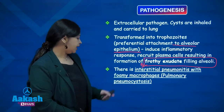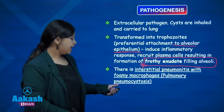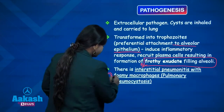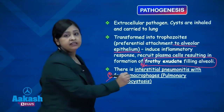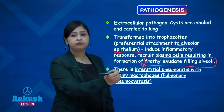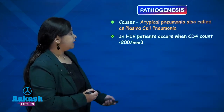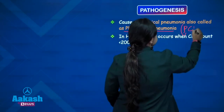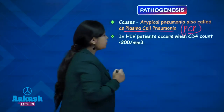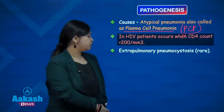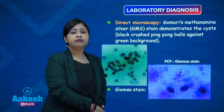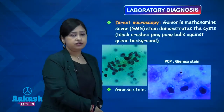There is interstitial pneumonitis with foamy macrophages and pulmonary pneumocystosis. This frothy exudate filling the alveoli is an important feature that can appear in exam questions. It causes atypical pneumonia and is also called plasma cell pneumonia or PCP. It occurs in HIV patients with CD4 count less than 200. Extrapulmonary pneumocystosis is rare; most exam questions will be from pulmonary pneumocystosis.